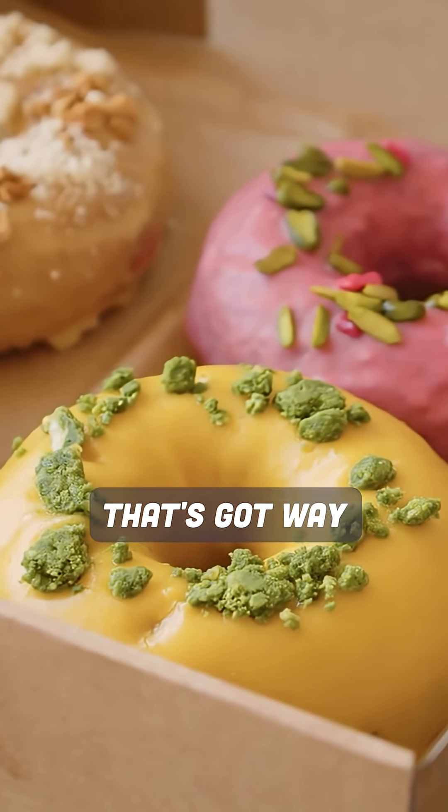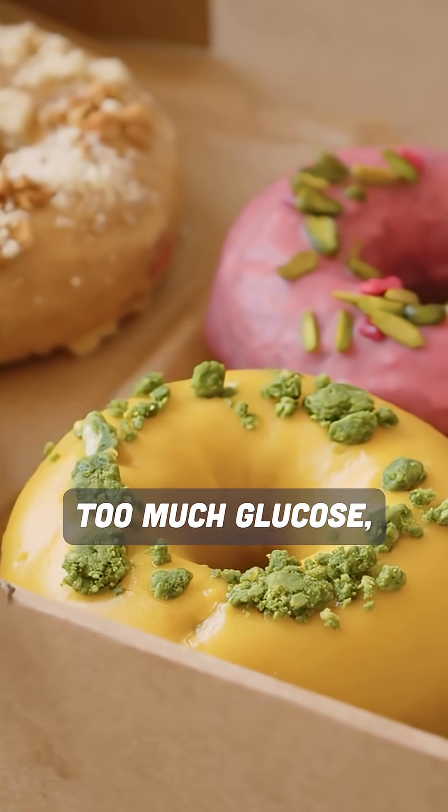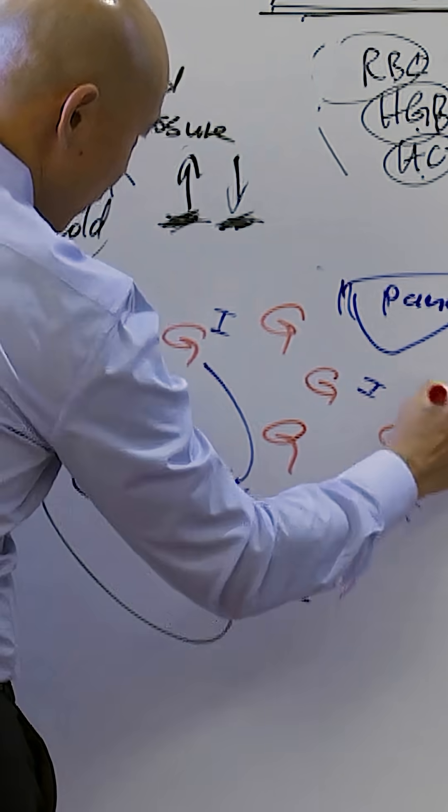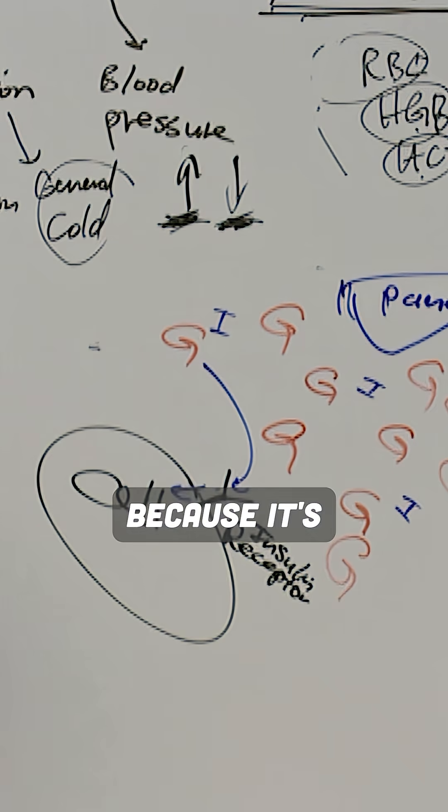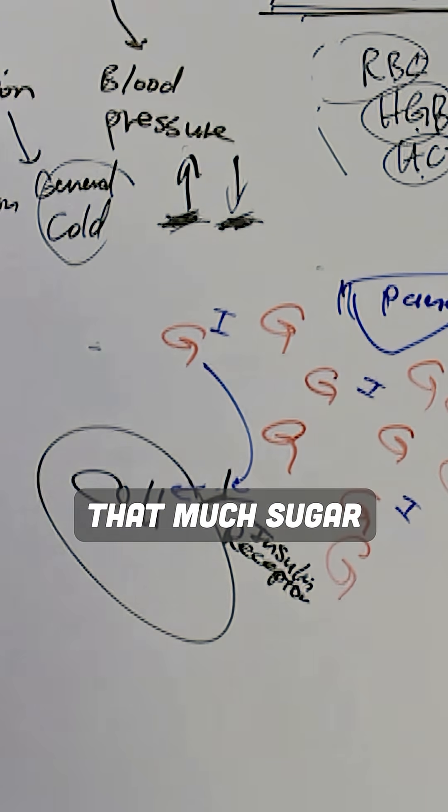If you eat a meal that's got way too much glucose, way too many G's, that's abnormal because it's not normal for you to encounter that much sugar.